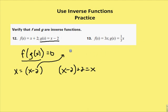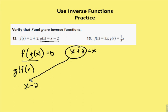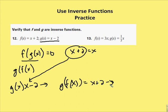Now finding g(f(x)): we take f(x) = x + 2 and substitute it in for x in g(x) = x − 2. The result is g(f(x)) = (x + 2) − 2 = x. Since both f(g(x)) and g(f(x)) equal x, f and g are confirmed to be inverse functions in number 12.